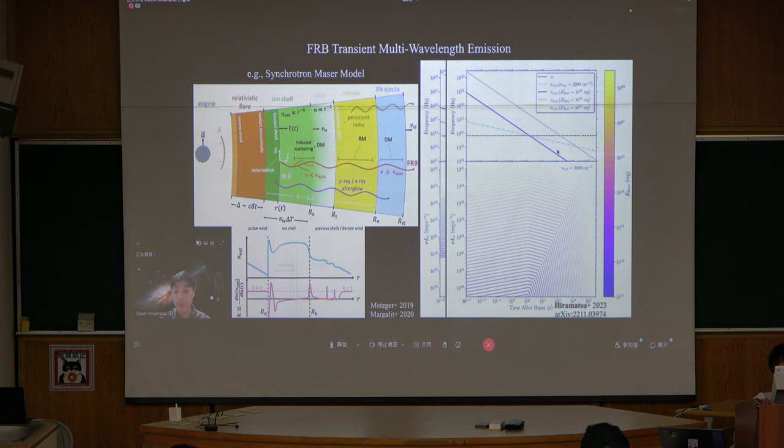If you fix the external density to a certain value and vary the flare energy, you see here again a diverse variety of behaviors which could last up to 10,000 seconds. For this model, we might expect minute to hour time scale emission in the optical bands, because in this case I show the light curves in the R band.